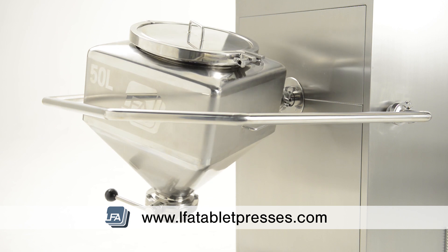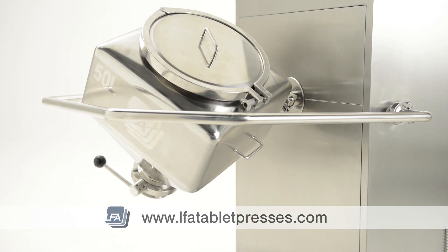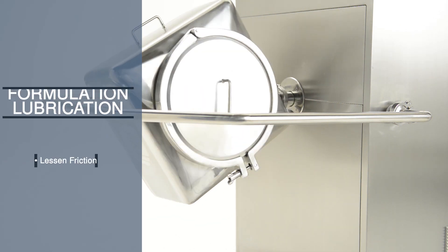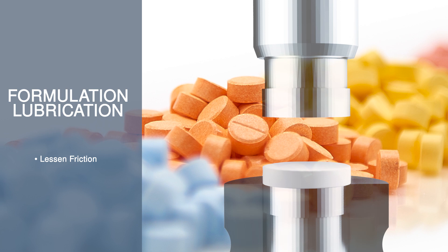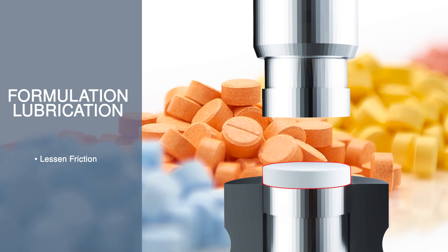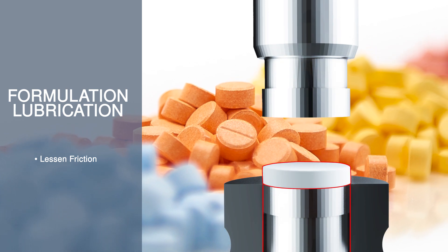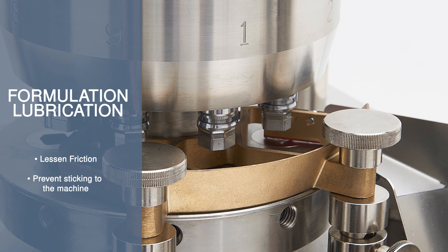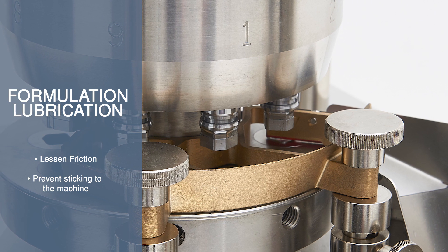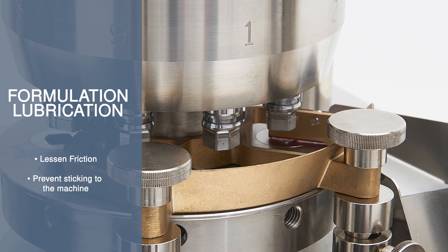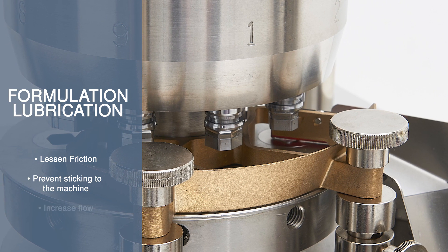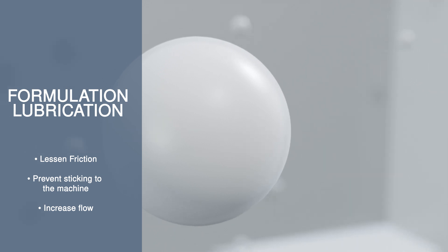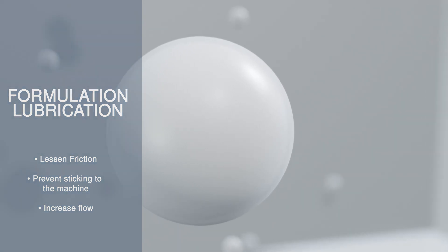A lubricant is extremely important in a formulation and there are three main roles it will play: to lessen the friction between the tablet surface and the die wall during ejection; to prevent the solution from sticking to the parts of the machine that it is currently running through; and to increase flow by reducing friction amongst the particles themselves.